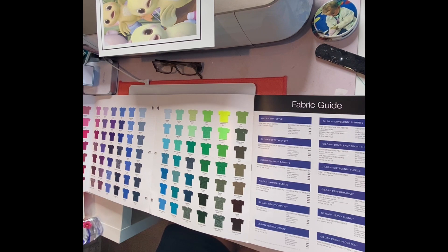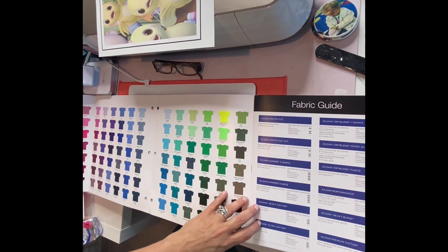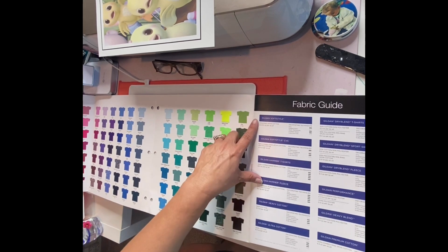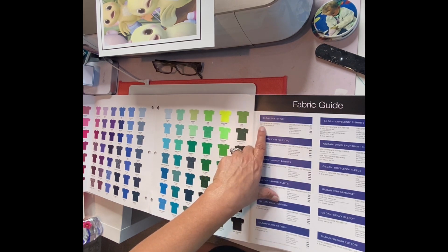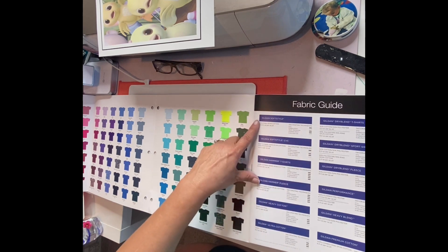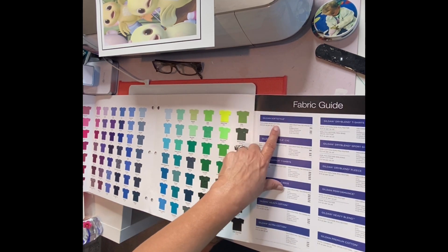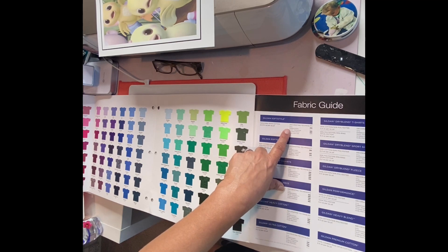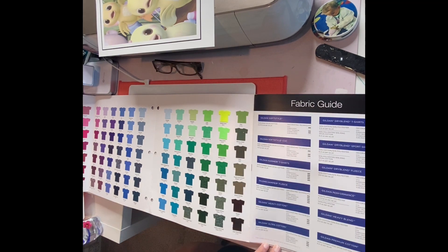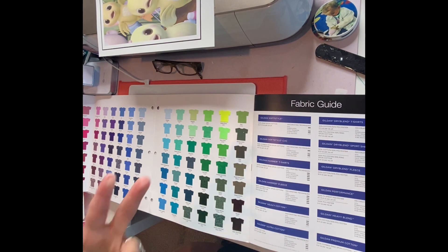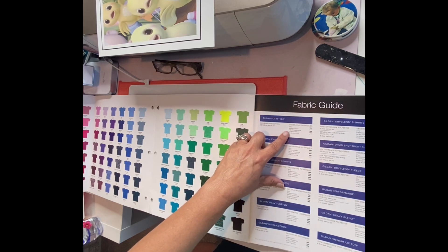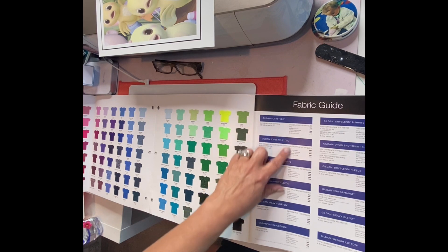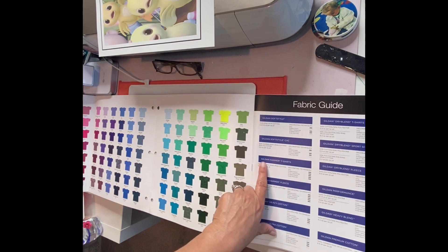This also gives you a fabric guide and they will tell you what you can use different fabrics for. So like this is 100% ring spun cotton. Decorating techniques: DTG, I don't know what that stands for, but heat transfer and screen print. And then they have the Gildan Hammer t-shirts.